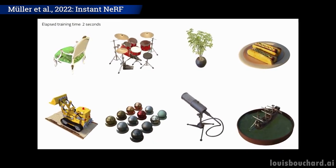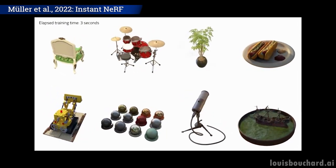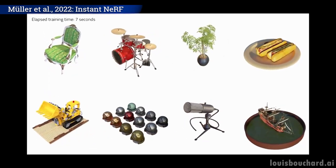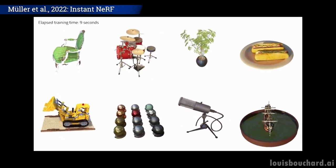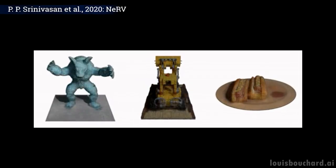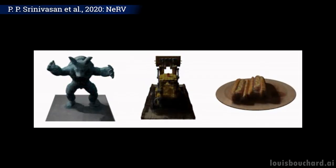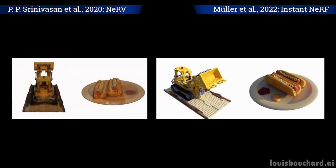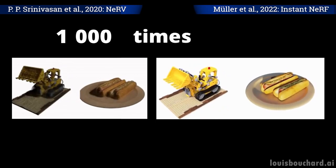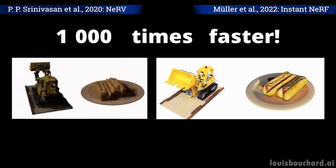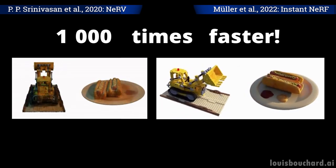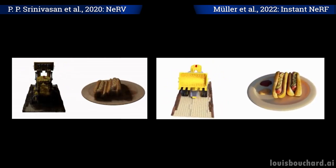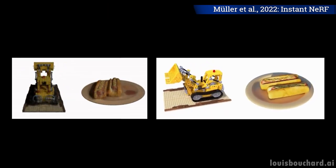Take a few pictures and instantly have a realistic model to insert into your product. The results have dramatically improved upon the first model I covered in 2020, called Nerf. And this improvement isn't only about the quality of the results — Nvidia made it even better. Not only is the quality comparable, if not better, but it's more than 1000 times faster with less than 2 years of research. This is the basis of AI research: exponential gains in quality and efficiency, a big factor that makes this field so incredible.